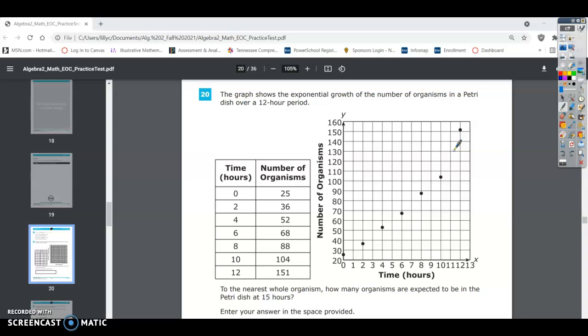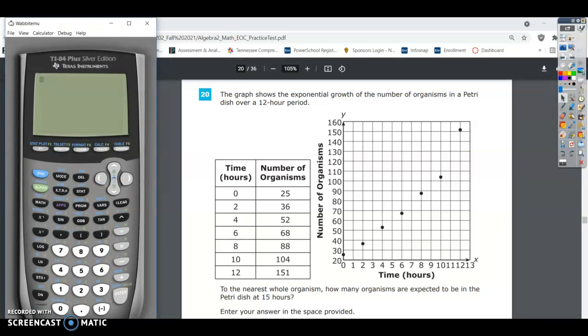So what we need to do is take these and put them in our calculator. If you have your graphing calculator, you can go to STAT and then EDIT. We want to put these numbers from the table in our table in the calculator. So I'm going to put 0, 2, 4, 6, 8, 10, 12. Go ahead and put L1, your time would be your L1 column.